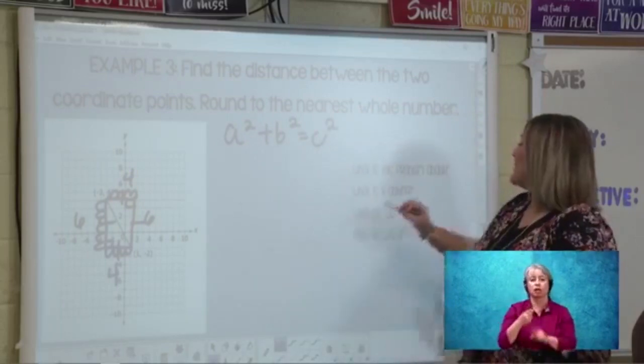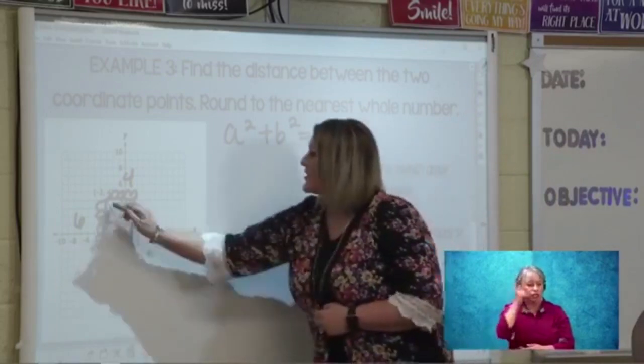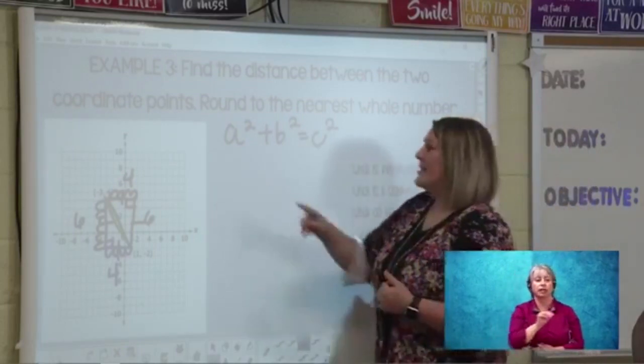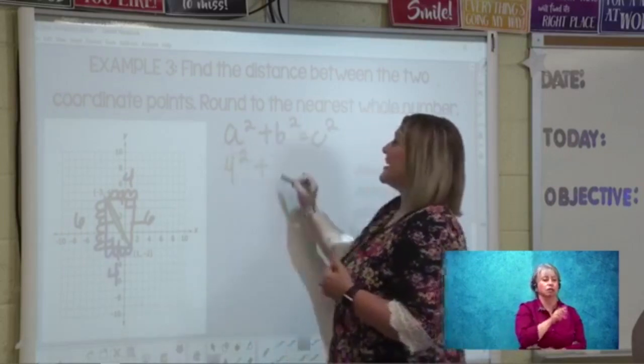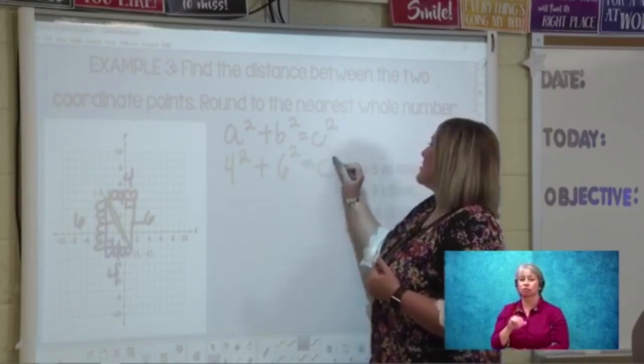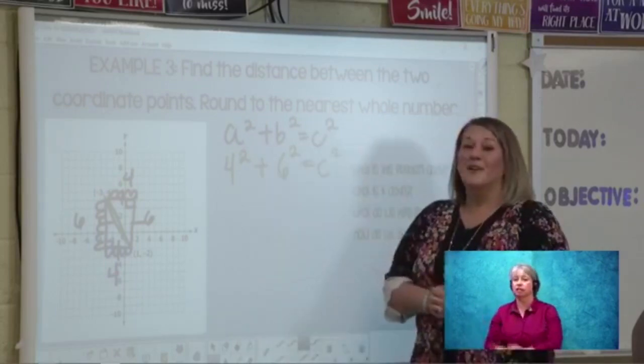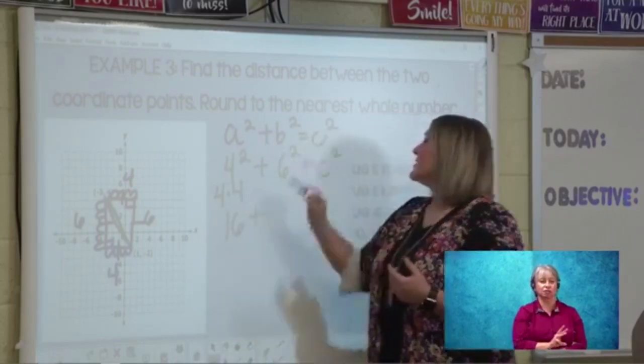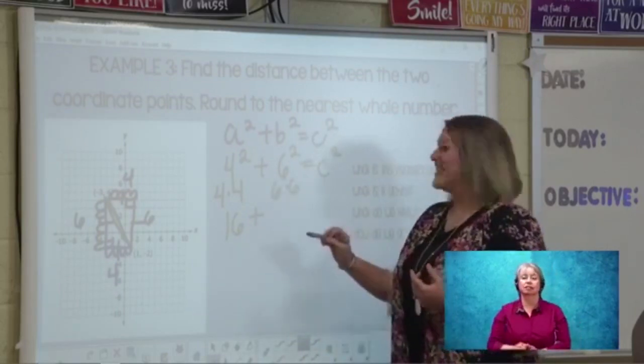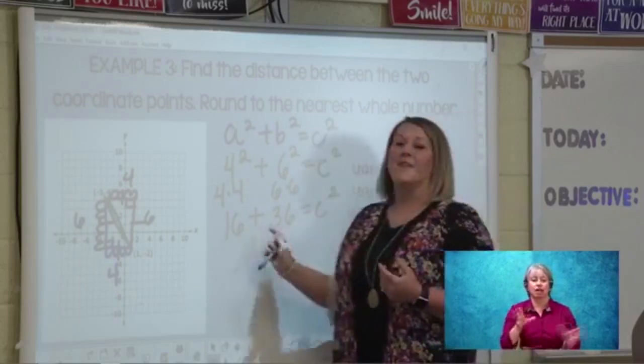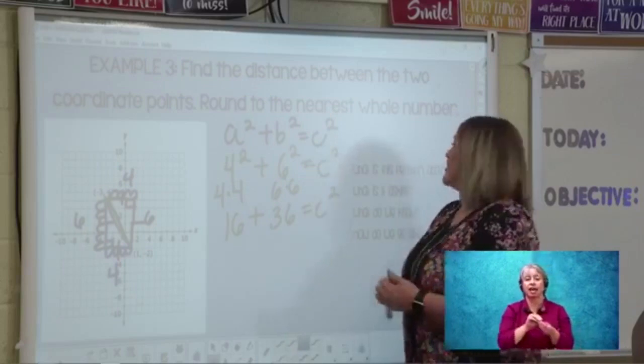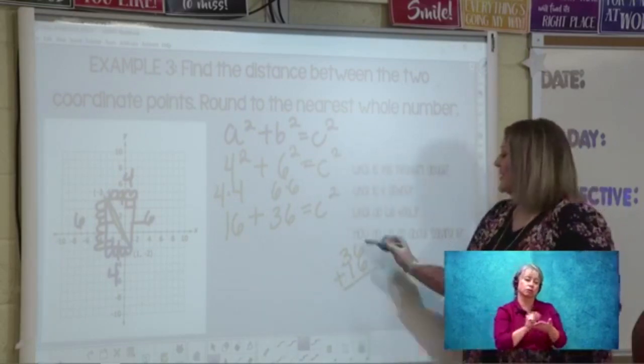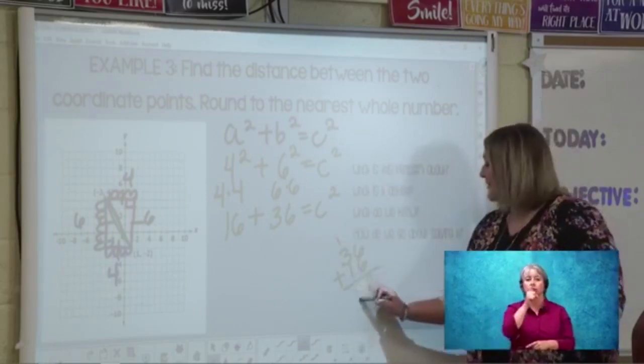So our first leg would be four. Our second leg is six. And we don't know our hypotenuse yet. So we're going to leave that as c². Four squared would be four times four. If you want me to write this out for you, four times four, that would be 16. Six times six, that's right, 36. And now we need to add those together, 36 and 16. And maybe you don't have a calculator handy. You can always go over to the side with scratch paper. I encourage my students to do this, just use paper and pencil. Six and six is 12. Carry my one, three, four, five. So 52. This time I'm going to write it with my c first.